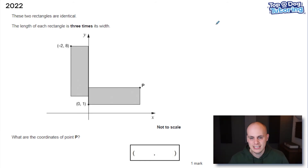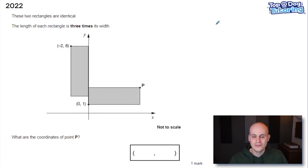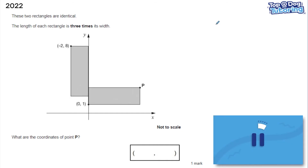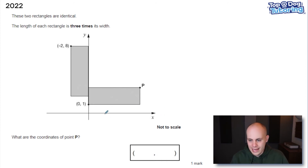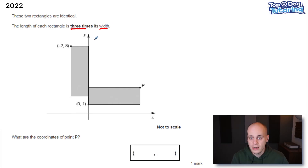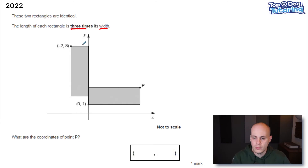On to my third favourite question — the third hardest in the SATs in recent years. It's from the 2022 paper and it's a coordinates question. I love this because the maths isn't too tricky, you just have to think outside the box. Two rectangles are identical on a coordinates grid with the x-axis and y-axis labelled but without numbers — that's part of the challenge. The length of each rectangle is three times its width — a really important fact. We can work out the width using the coordinate up here: the x coordinate is minus two and the other side of the rectangle is on the x-axis at zero.